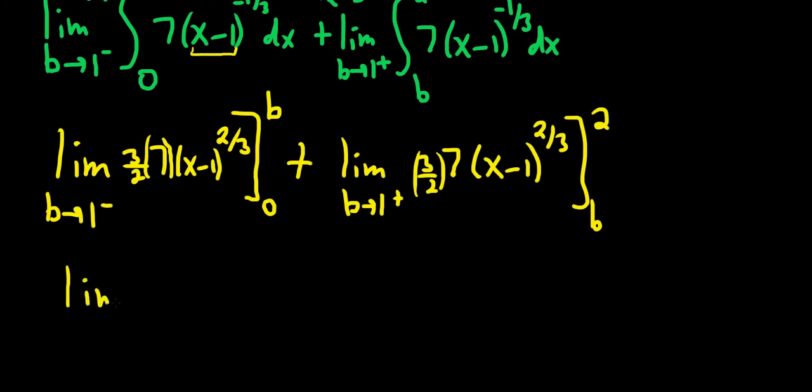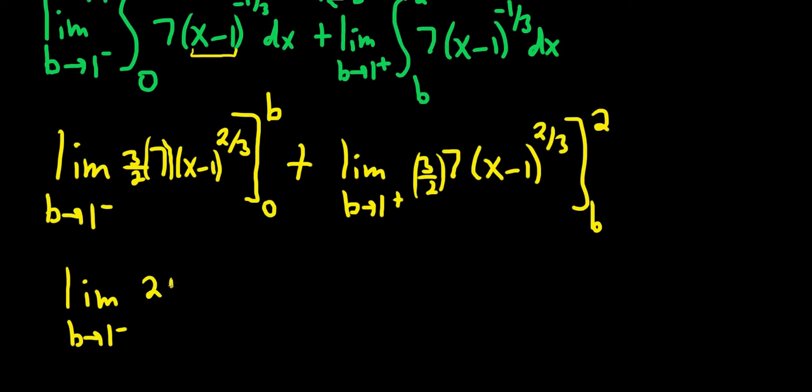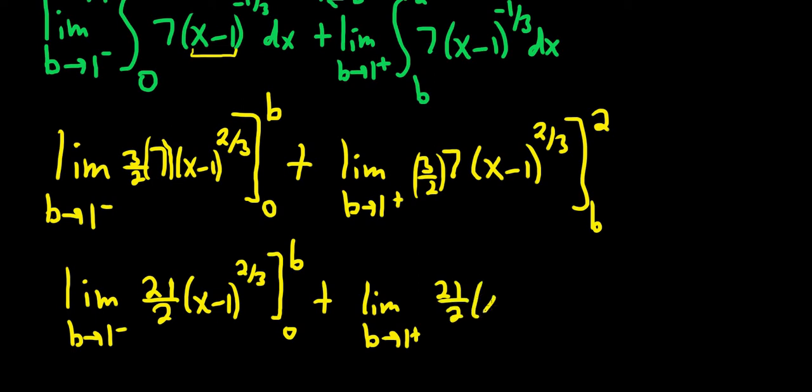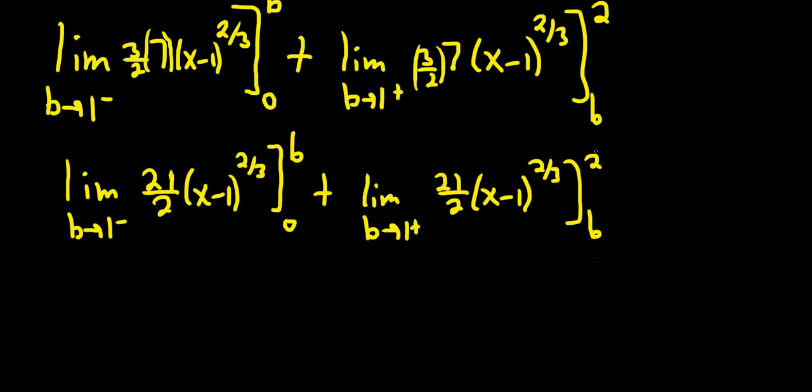So this is the limit as b approaches 1 from the left. So let's see. This is going to be 3 times 7 is 21. So this is 21 over 2. All I did here was multiply the 3 halves times the 7. I'm just taking a breather here and just slowing down. So I'm rewriting everything and just doing the multiplication here. So approaching 1. This is 21 over 2. I thought this problem was going to be a little bit harder, but I think it's going to work out. I think this is going to converge. Originally, I was thinking, oh, this is one of the divergent ones. But no, this thing is going to converge. So it's not so bad.